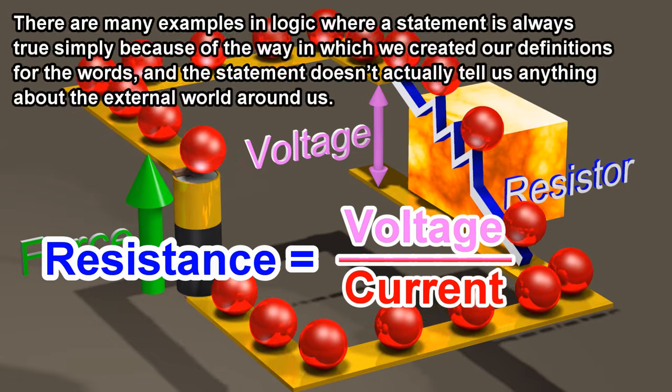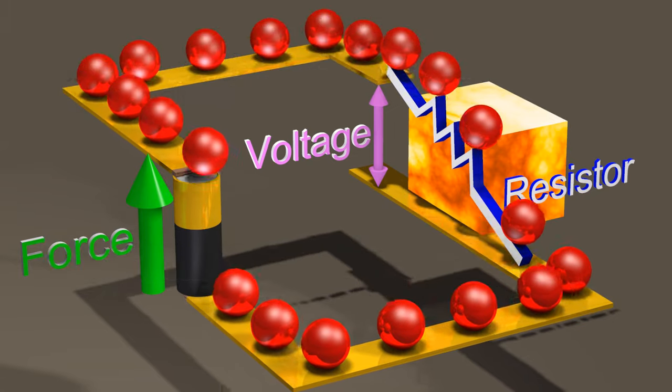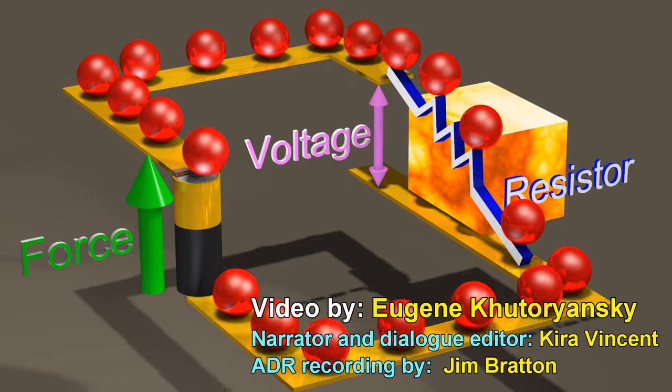There are many examples in logic where a statement is always true simply because of the way in which we created our definitions for the words, and the statement doesn't actually tell us anything about the external world around us. This is one of the logical fallacies we need to watch out for, both with regards to science and also with regards to life in general.